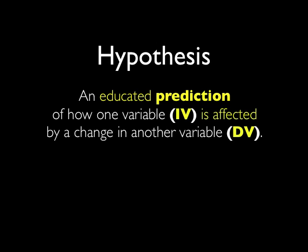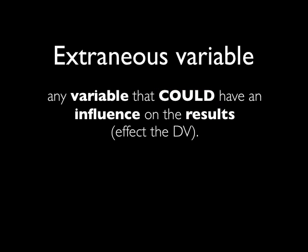The hypothesis is an educated prediction of how one variable, the independent variable, is affected by a change in another variable, the dependent variable. An extraneous variable is any variable that could have an influence on the results — that is, they can affect the DV.